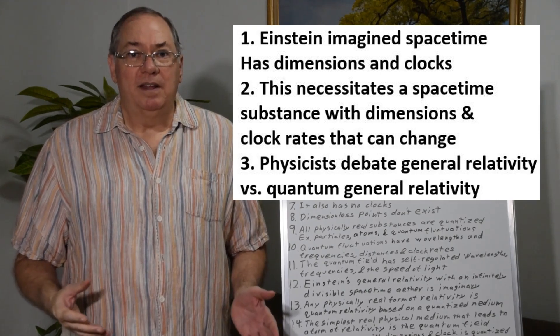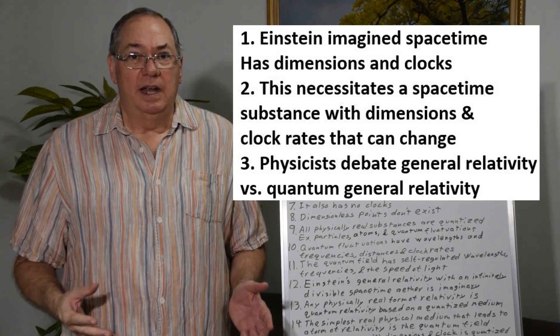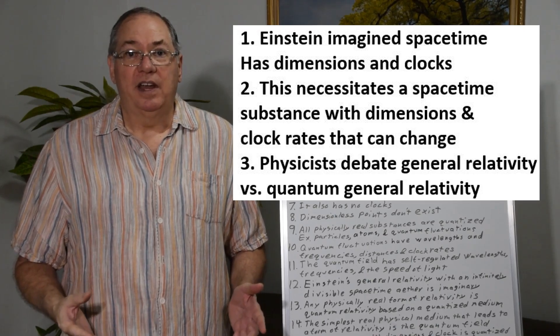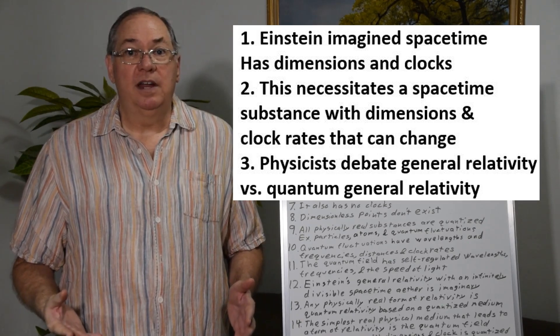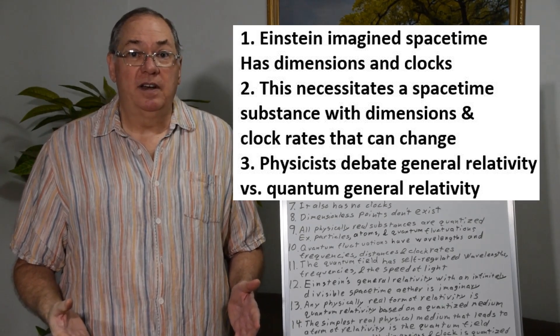Einstein never bothered to say where his dimensions and clocks came from or how they changed. It was a Godotkin experiment. It was purely imaginary then and it's purely imaginary today.